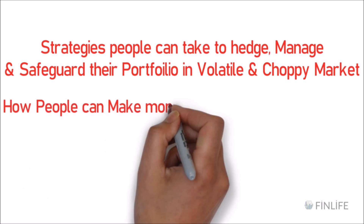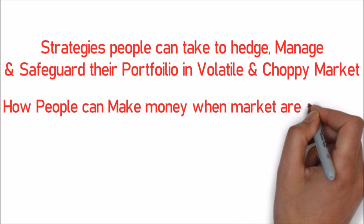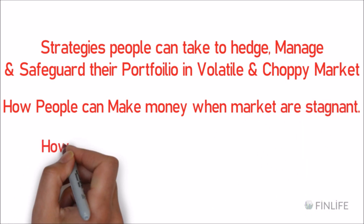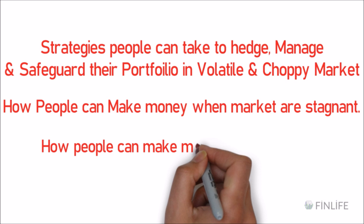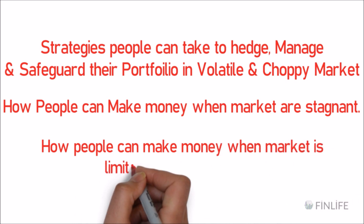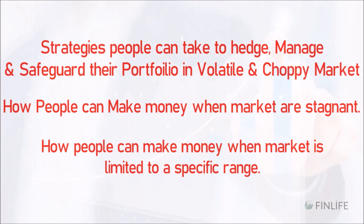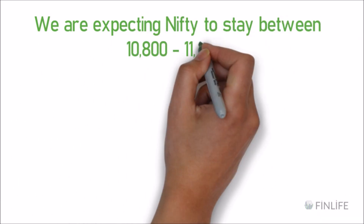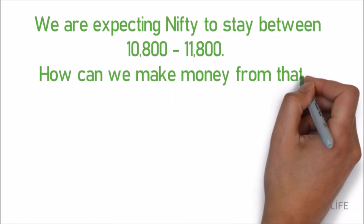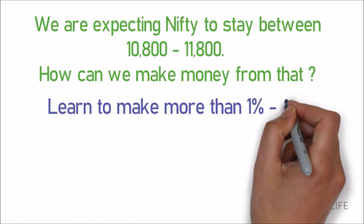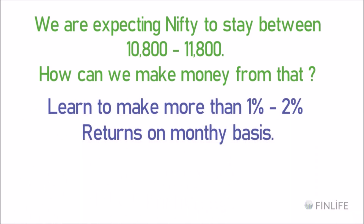We will also discuss how people can make money when markets are stagnating and not moving, and how people can make money when they expect markets to stay within a specific range. For example, if we expect Nifty to stay between 10,200 and 11,200, we'll learn strategies to make more than 1-2% returns on a monthly basis by rolling over trades.